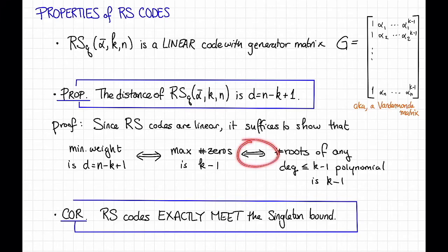Notice that for these if and only if arrows to strictly make sense, we should argue not only that low-degree polynomials don't have too many roots, but also that there is a polynomial of degree at most K minus 1, which has K minus 1 roots. This is also true. If it's not clear immediately, pause the video and figure out why.